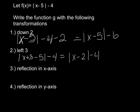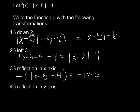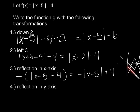For a reflection in the x-axis, multiply the whole function by a negative — not just the part inside. Put the negative out front and distribute it: the −4 at the end becomes +4. So you get −|x − 5| + 4. The original V-shape pointing down becomes a V pointing up, which is the true reflection over the x-axis.